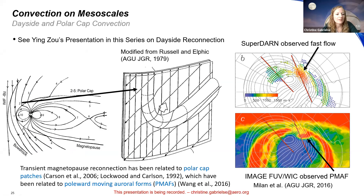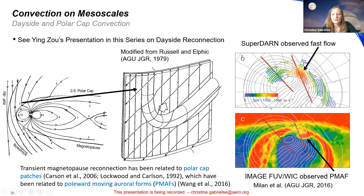Ying Zhou showed more about dayside reconnection in her series, so check out her talk for more. When you have transient magnetopause reconnection on the dayside, that creates a flux transfer event (FTE). These mesoscale flux transfer events move anti-sunward and across the polar cap, creating strong mesoscale flows visible in SuperDARN data superimposed on the large-scale background convection pattern. Associated with these events are auroral forms such as polar moving auroral forms (PMAFs) observed with the IMAGE FUV instrument.